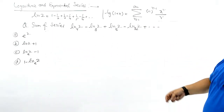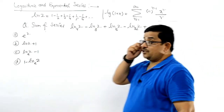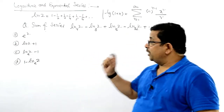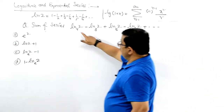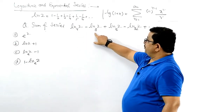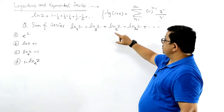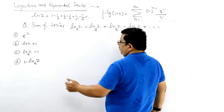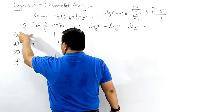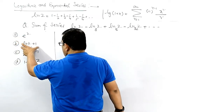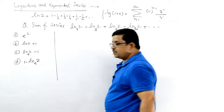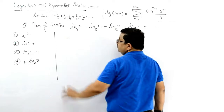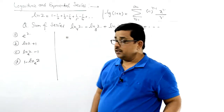सब questions में अलग-अलग कुछ change होता है और वो detect करना आता है। यह log2 लिखा है — log to the base 4, log to the base 8, log to the base 16, log to the base 32 — इस तरह से दिया हुआ है। इसकी value निकालनी है। यहाँ पर हम base change formula लगा देते हैं।